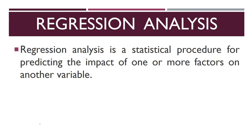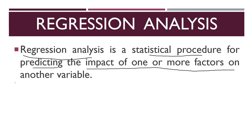In regression analysis we are going to take a minimum of two variables and see the impact of one variable on another. There can be more than two variables — we can see the impact of two variables on a third variable, or four variables on a fifth variable. That's why regression analysis is called a statistical procedure for predicting the impact of one or more factors on another variable.